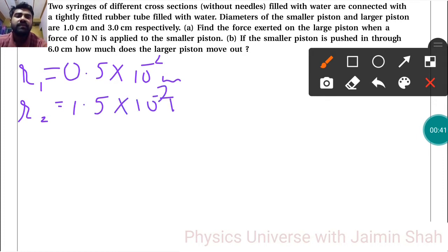Find the force exerted on the large piston when a force of 10 Newton is applied to the smaller piston. So see, F1 we have, that is 10 Newton. We have to find F2.